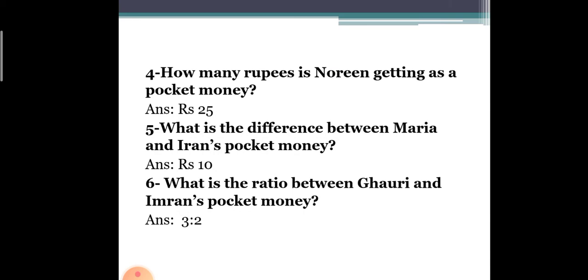What is the ratio between Gauri and Imran's pocket money? Gauri's is 30 rupees and Imran's is 20 rupees, so the ratio becomes 3:2. His 30 is more and Imran's is less, so 3:2 is the answer.